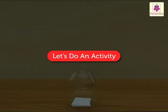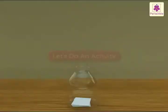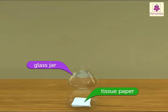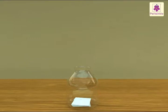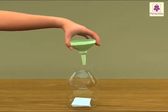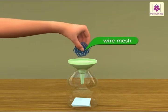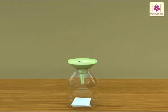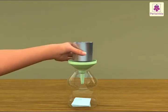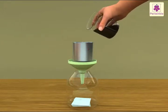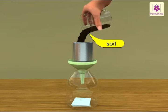Let us do an activity to observe the tiny creatures found in soil. Line the bottom of a glass jar with a thick layer of tissue paper. Moisten it. Put a funnel in the mouth of the jar. Fit a wire mesh into the funnel opening. Take a can with both ends open and put it on the wire mesh. Pour soil into the can.